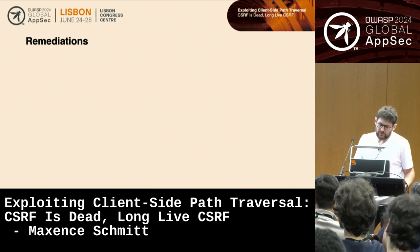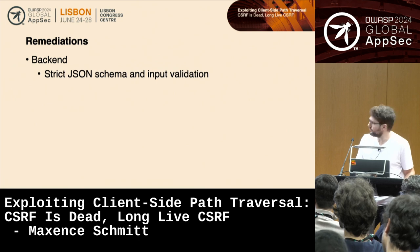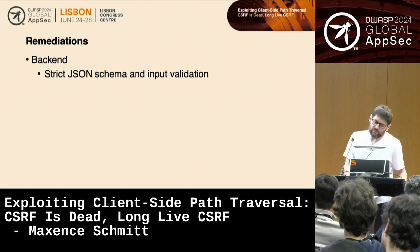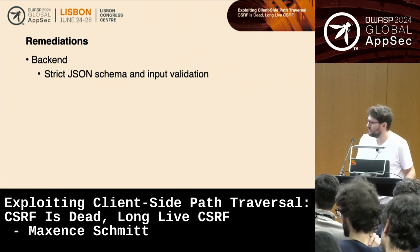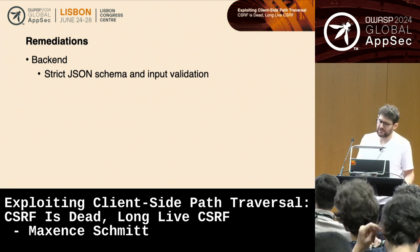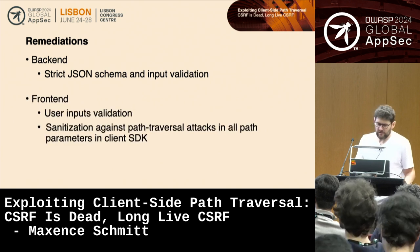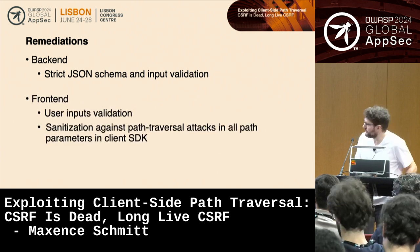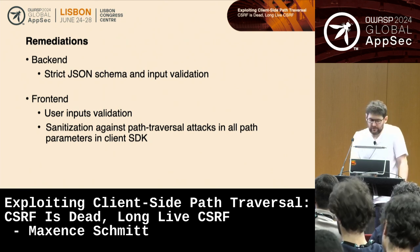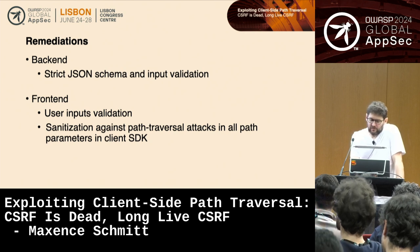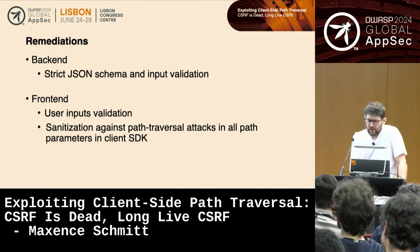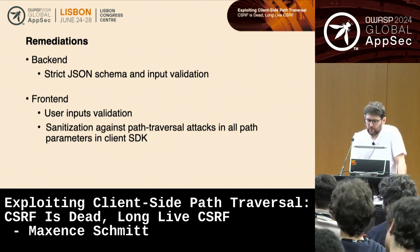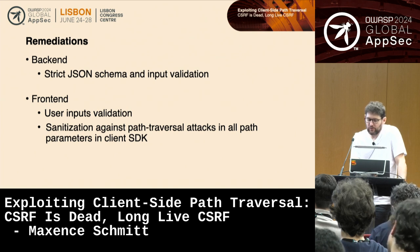For remediation on the backend: use strict JSON schema and input validation. If you expect a certain schema — for example, an id and a first_name string — it should not accept any other parameter. On the front end: validate user input in path parameters, and sanitize any user input used as a path parameter inside the current SDK. Most front-end developers use an SDK auto-generated by an OpenAPI generator and may not know that the id is being inserted inside the path parameter.